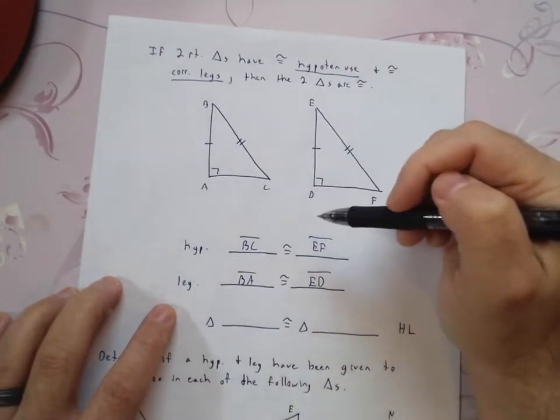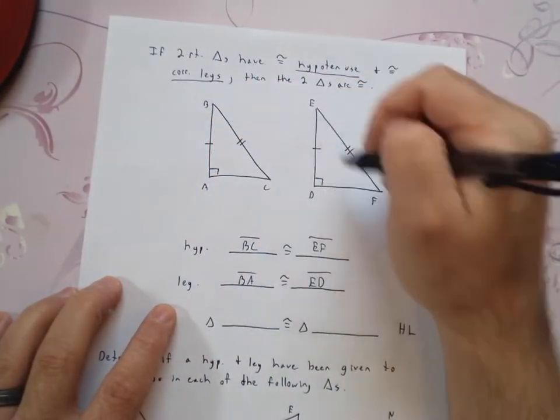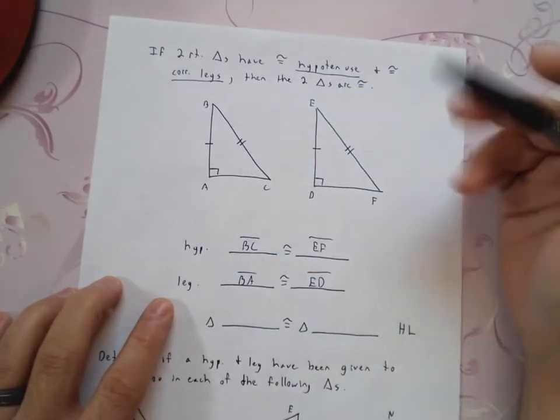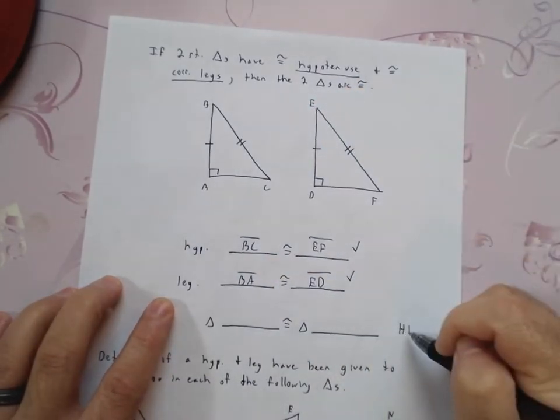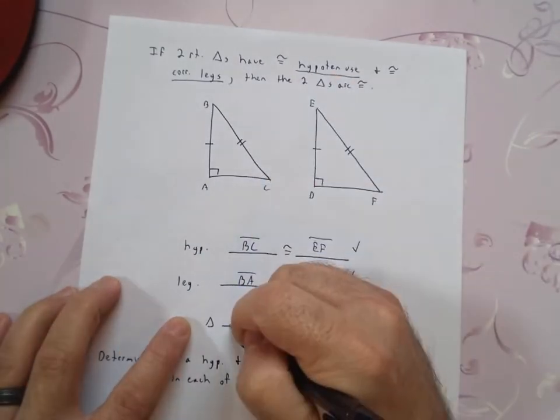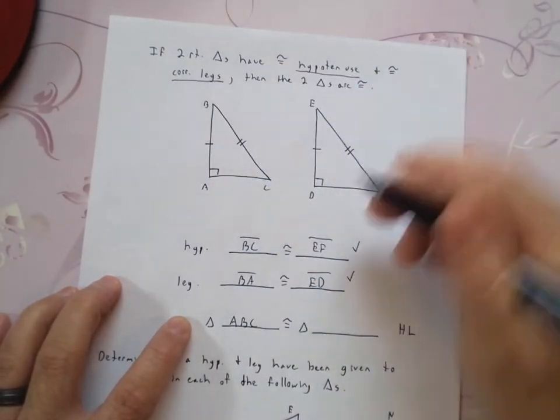So there, we can see that we have a right triangle because we're perpendicular right here. Perpendicular means we have right angles. So these triangles are right triangles. We can see that we have a leg and a hypotenuse congruent. Check, check. Again, HL is like a checklist, but we only need two. And so now we know that triangle ABC has to be congruent to triangle DEF.